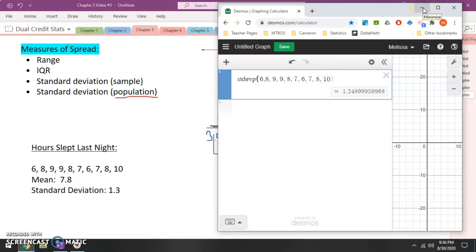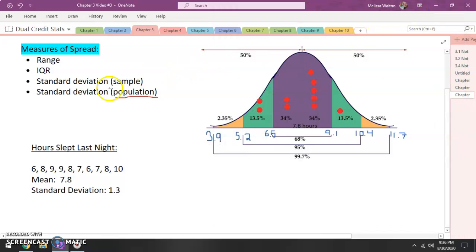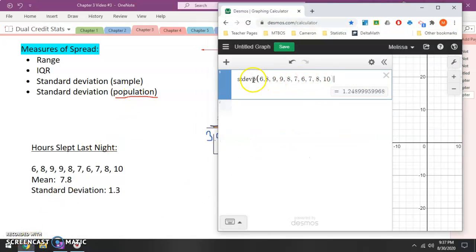So when you're doing your MyMathLab or when you're doing your homework, if it's a sample, just use standard deviation. But if it says, hey, this is our population, calculate the standard deviation. If it says population, make sure you add that P in there to adjust your standard deviation. This is the standard deviation.